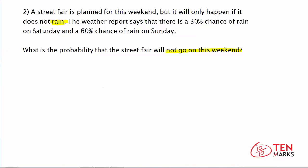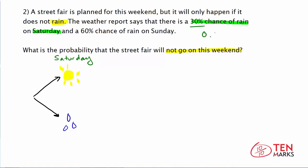We have some information — the weather report says 30% chance of rain on Saturday. So let's diagram that out. I'm going to begin with two arrows. I'll draw a little sun — meaning it's going to be nice out — and some raindrops. So this is Saturday. The probability of rain on Saturday is 30%, or 0.3 as a decimal. This means there is a 0.7 or 70% chance it's not going to rain on Saturday — that it'll be sunny.